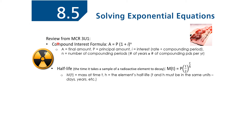Just a review from grade 11. This was the compound interest formula you learned last year, and these are what all the variables or parameters represented. Your I-value is whatever your rate is — say it was 8%, that would be 0.08 — divided by the compounding period. If your money is being compounded quarterly, you would divide by 4. N is the number of compounding periods, found by taking the number of years times the compounding frequency.